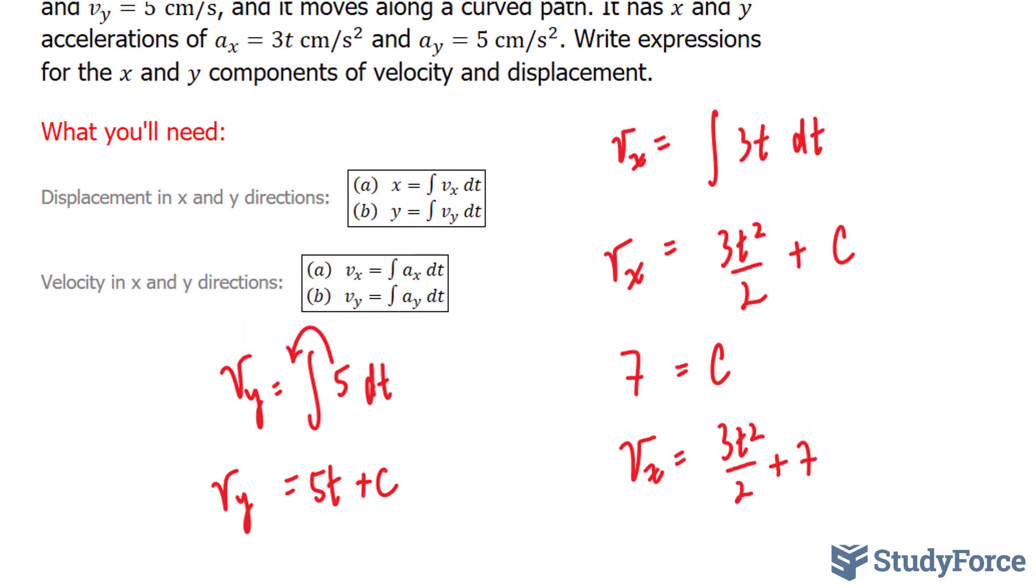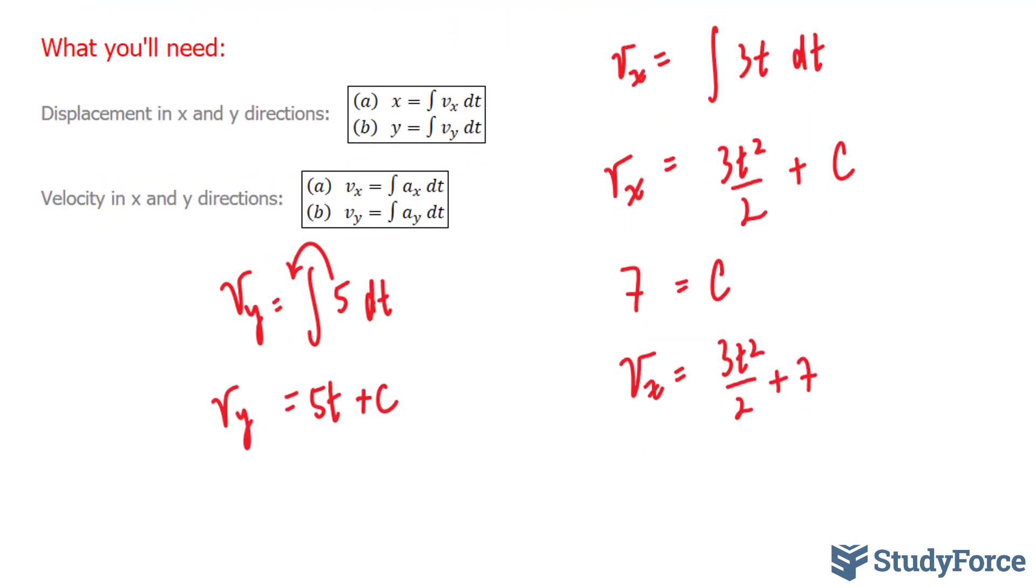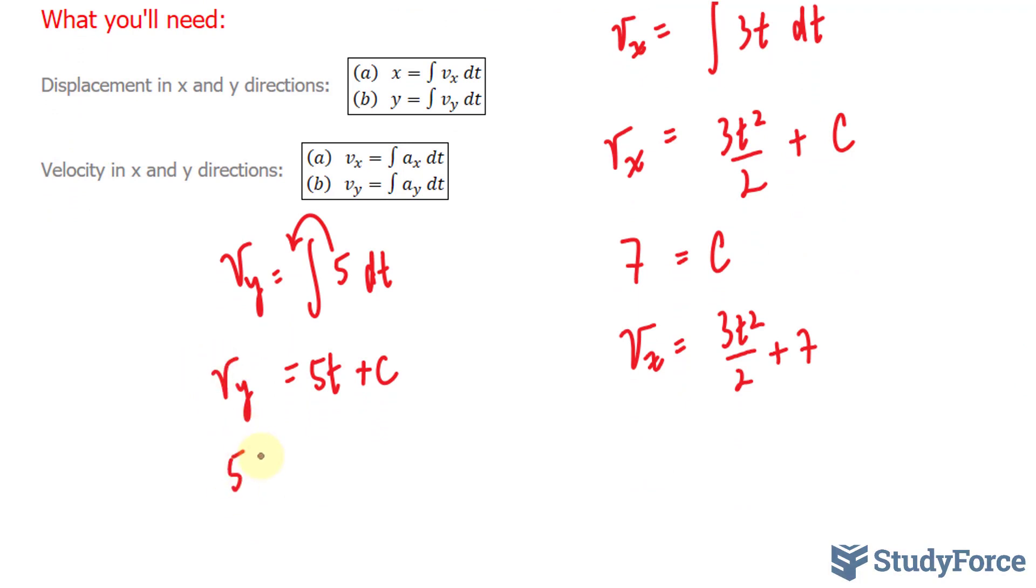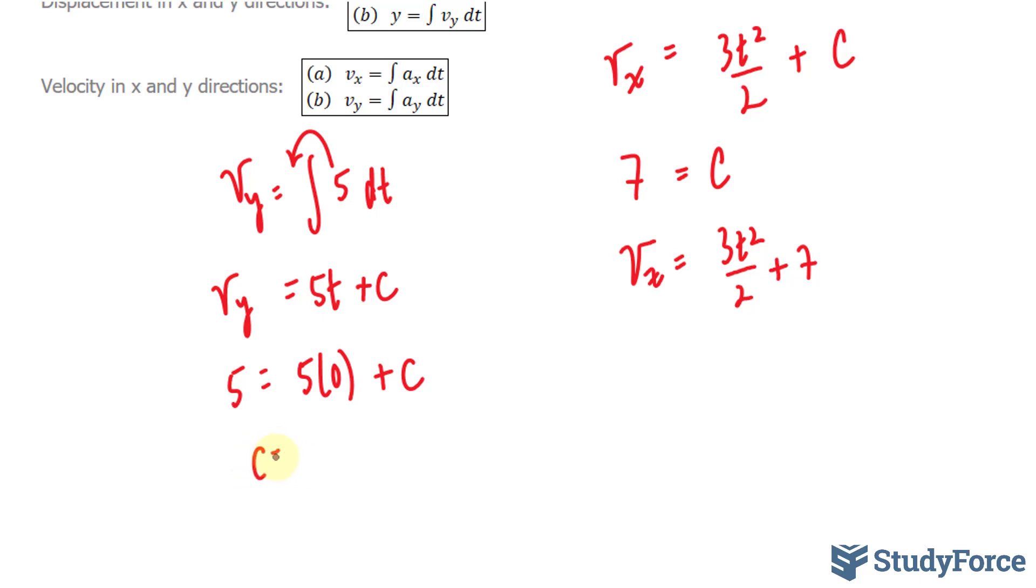We know what v_y is according to the question. It's 5 centimeters. So I'll place 5 in here, and I'll replace t with 0 because this is initial velocity.